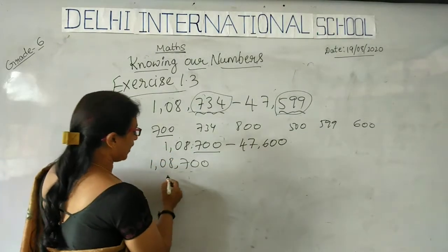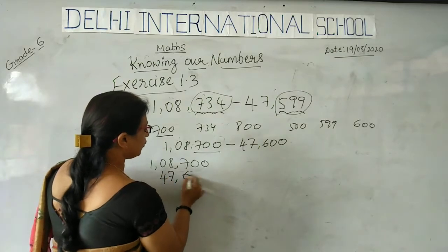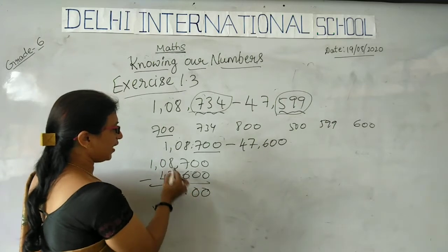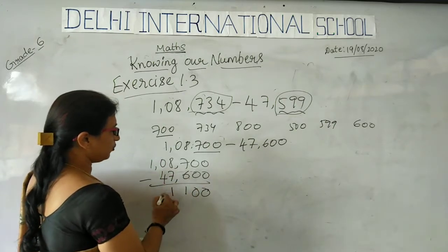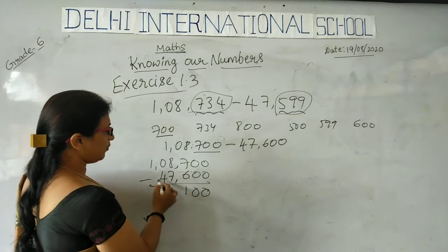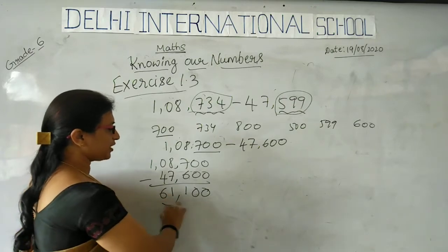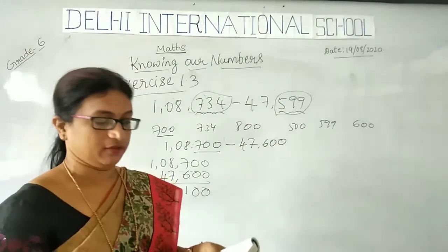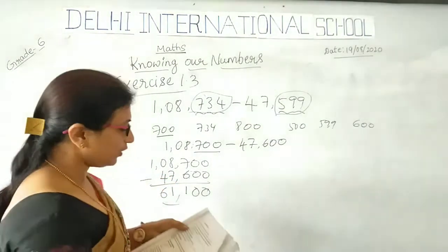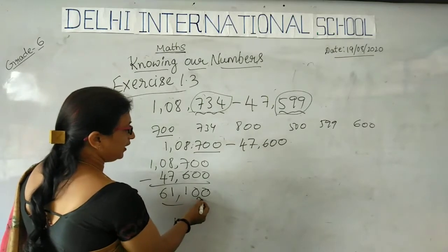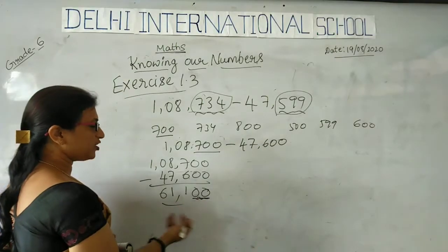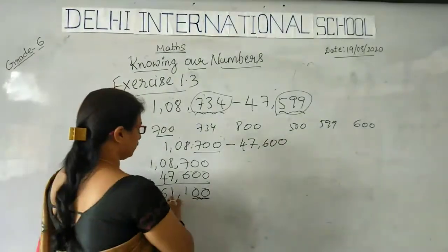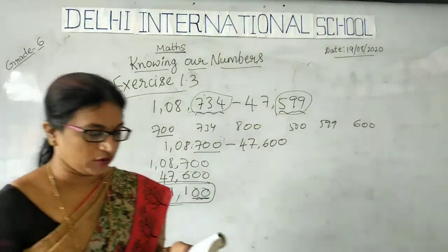We have 1,08,700 minus 47,600. So I subtract: 7 minus 6 is 1, 8 minus 7 is 1 — so 10 minus 2 gives 61,100. So the answer is 61,100. Now I have to bring this to the nearest ten. The last digit is already 0, so no need to change — the final answer remains 61,100.